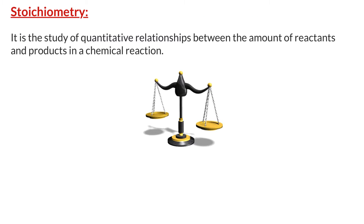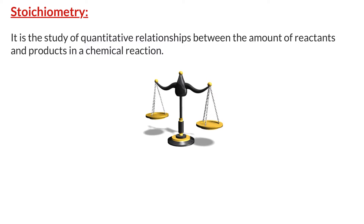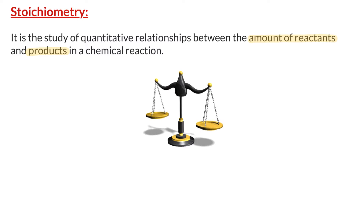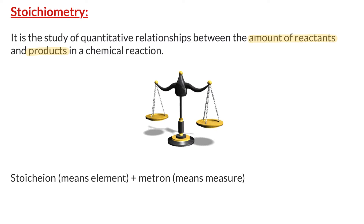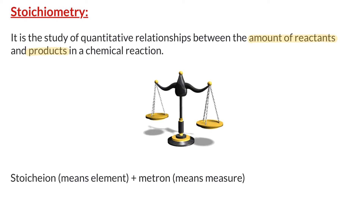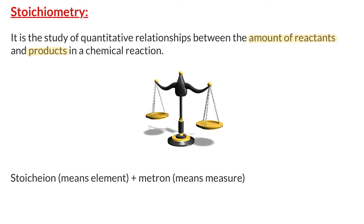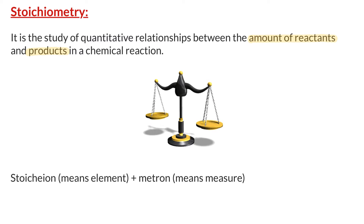First, let us define the term stoichiometry. Stoichiometry is the study of quantitative relationships between the amounts of reactants and products in a chemical reaction. In fact, the word stoichiometry is derived from two Greek words: stoikion, which means element, and metron, which means measure. Therefore, stoichiometry literally means measuring elements.